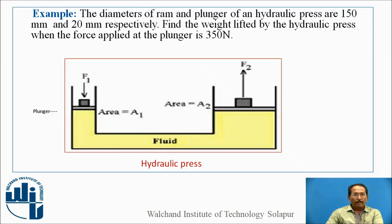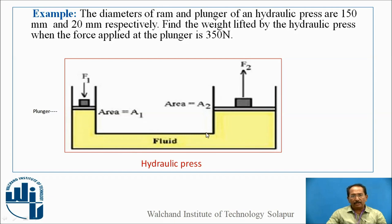Depending on Pascal's Law, we will solve one example — the hydraulic press. The diameter of the ram and plunger of a hydraulic press are 150 mm and 20 mm respectively. Find the weight lifted by the hydraulic press when the force applied at the plunger is 350 N. In this hydraulic press, the ram has a weight placed on it, and through the plunger a force F1 is applied, which is transmitted to lift the weight W.